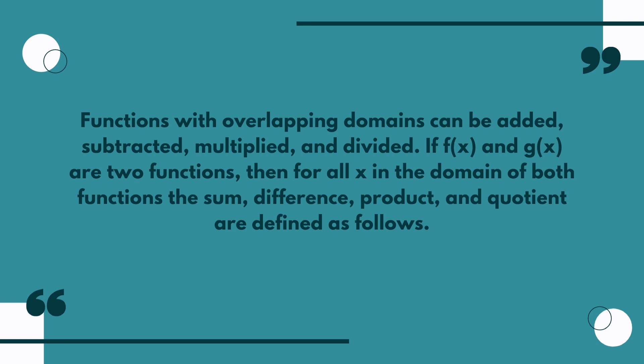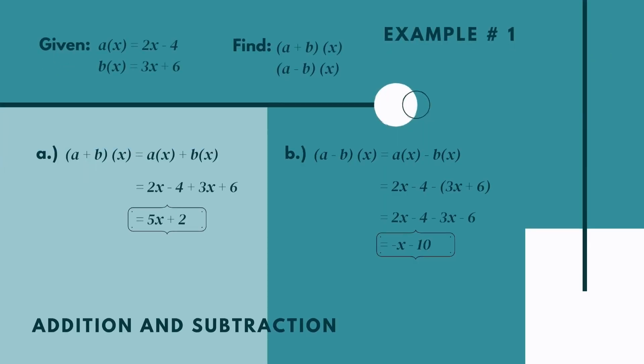We will first tackle addition and subtraction and their examples. Example number one in addition. Let's say we have a function a(x) equal to 2x minus 4, and b(x) equal to 3x plus 6. Then find: letter a, (a + b)(x), and letter b, (a - b)(x). Let's find letter a first. (a + b)(x) is equal to a(x) plus b(x). Since we have a given a(x) and b(x), we are going to substitute.